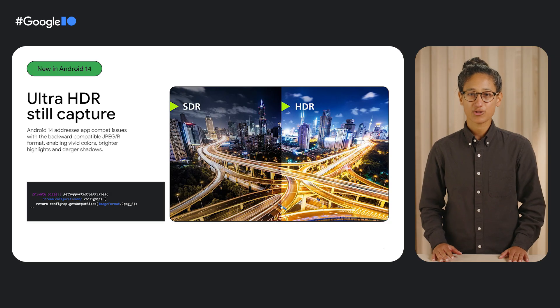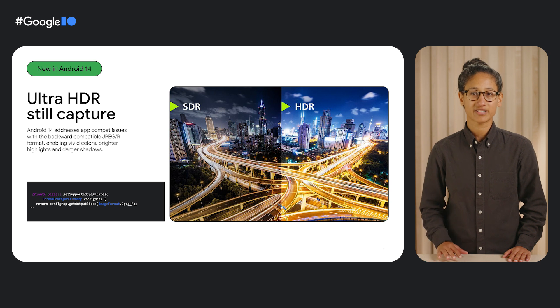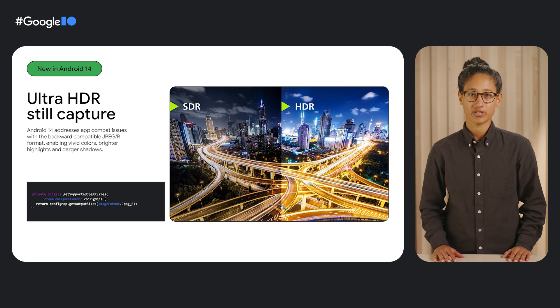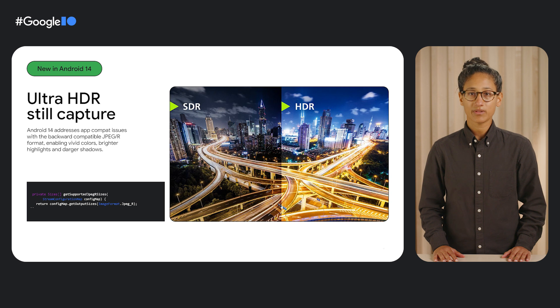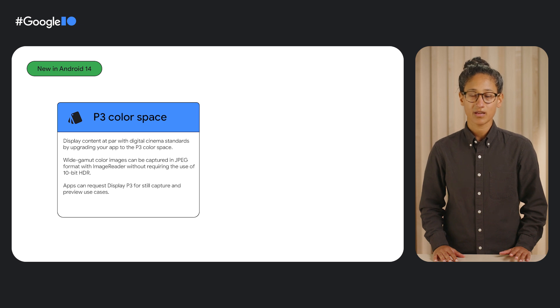Thanks, Mozart. Before we close out, I want to share three more new features launching in Android 14. In Android 13, we launched HDR video capture. Now we're adding to our HDR experiences by launching Ultra HDR for still captures. Ultra HDR lets you bring 10-bit HDR capture to your users for more vibrant content. We know AppCompat is important to developers, so we've designed a backwards-compatible JPEG-R format for Ultra HDR. Android 14 also offers P3 color space, which means your Android app can now display content at par with digital cinema standards with just a few lines of code.